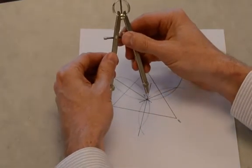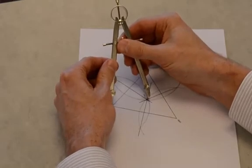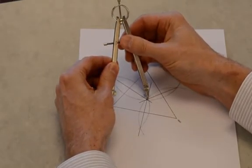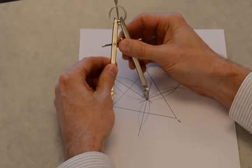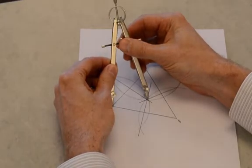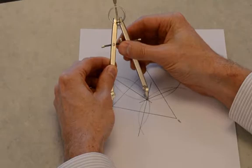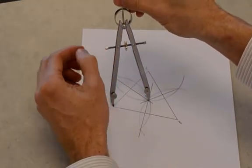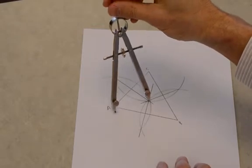Now to circumscribe the circle, what you need to do is put the pointy end of the compass on the circumcenter. And then adjust the width until the pencil reaches exactly to one of the vertices. Now the thing is about the circumcenter, it is equidistant from all three vertices of the triangle.